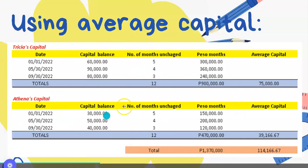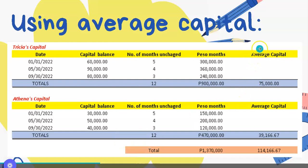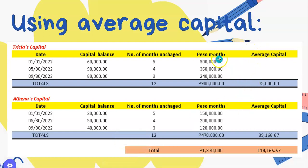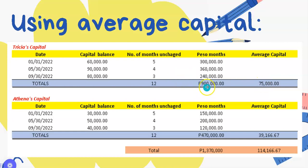Using the average capital method — similar to the previous video's formula — we'll place the average capital next to the peso signs. To get the average capital, divide the total peso-months by 12. So 900,000 pesos divided by 12 gives an average capital of 75,000.